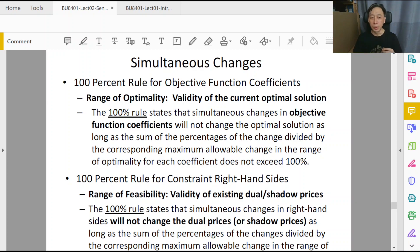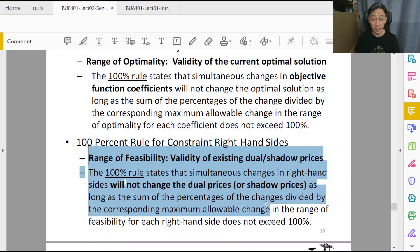In our earlier examples we have always been trying to give examples on one change - either one change in the objective function coefficient for the range of optimality analysis, or one change in the right-hand side if we are talking about changes to the constraints.